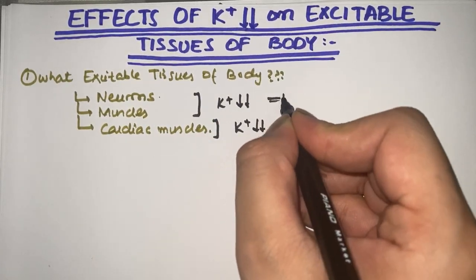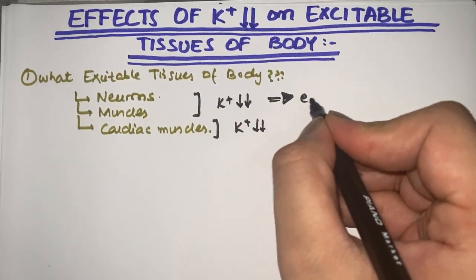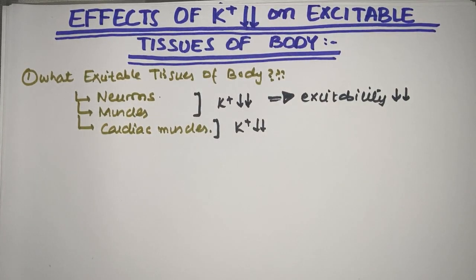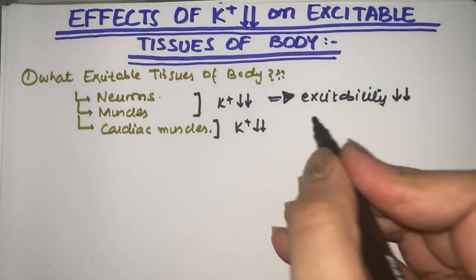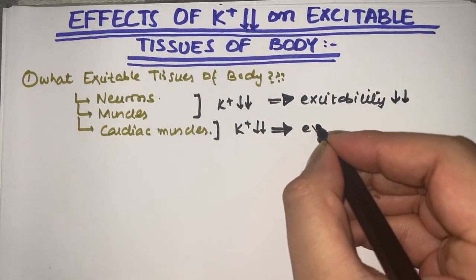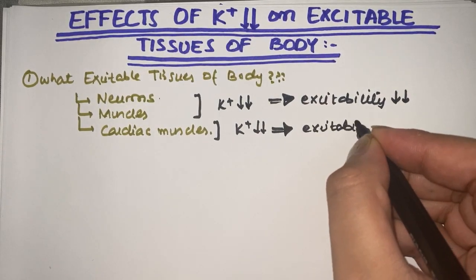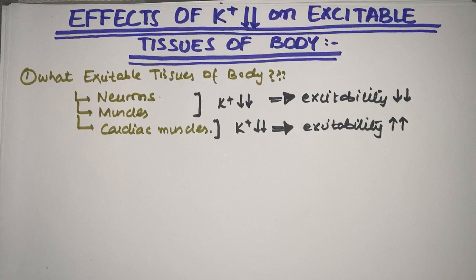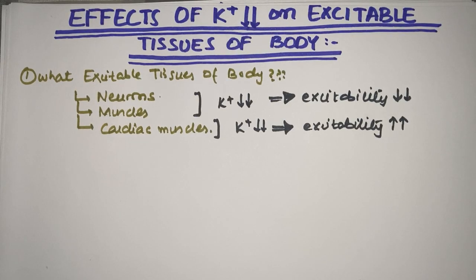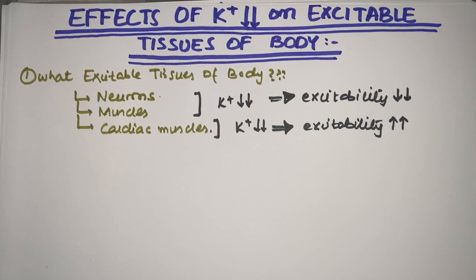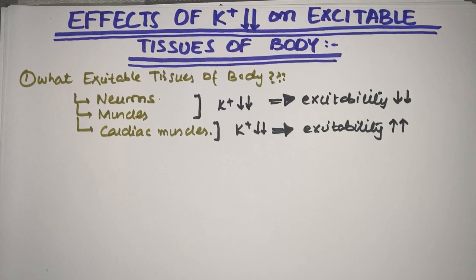In neurons and muscles, hypokalemia decreases potassium and therefore decreases excitability. But — and I'm stressing this a lot — in cardiac muscles, the excitability due to hypokalemia is actually increased. So these are the two opposing lines that this whole video will explain in detail.